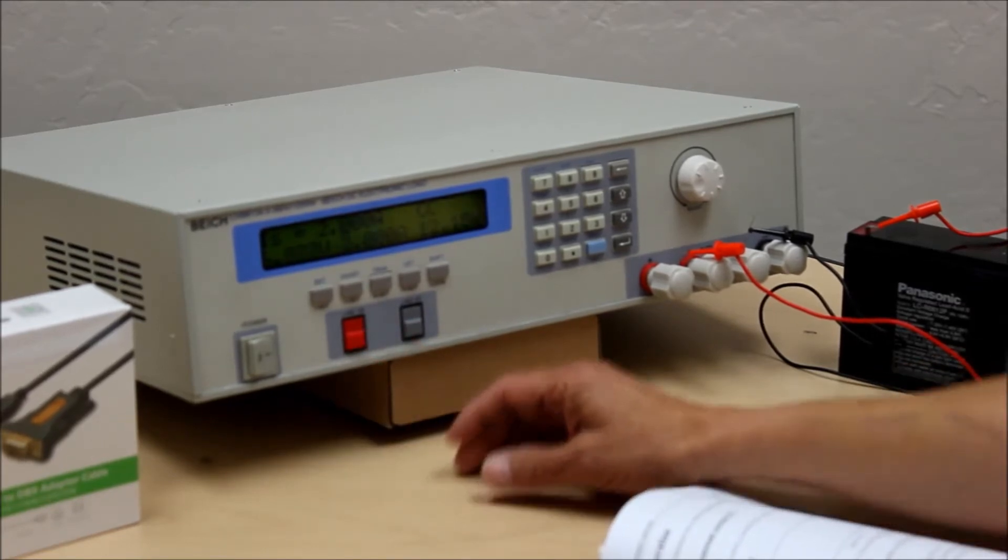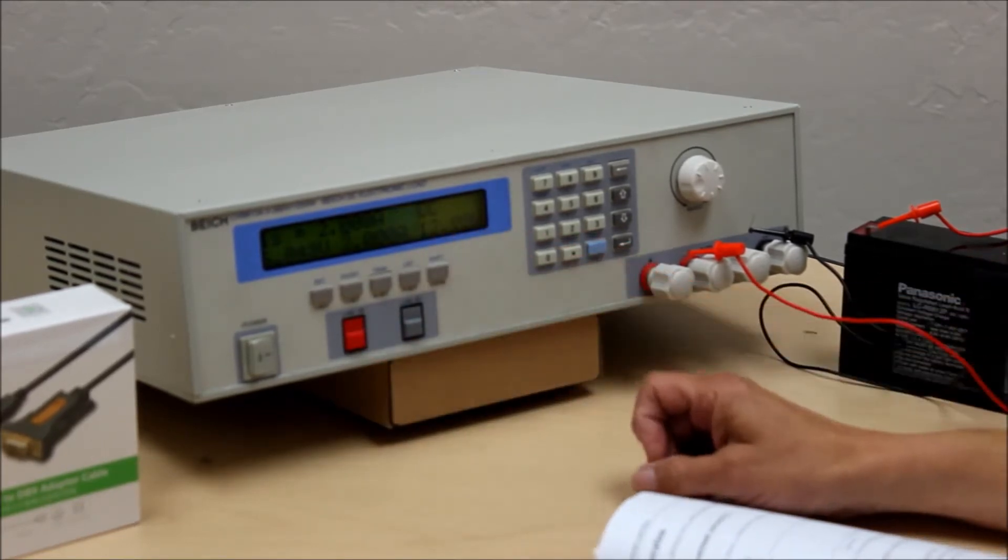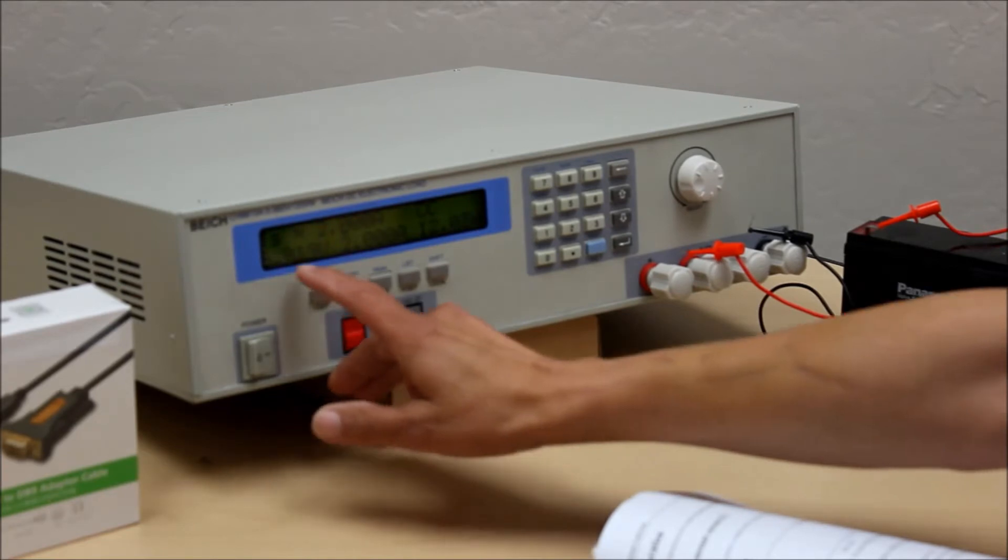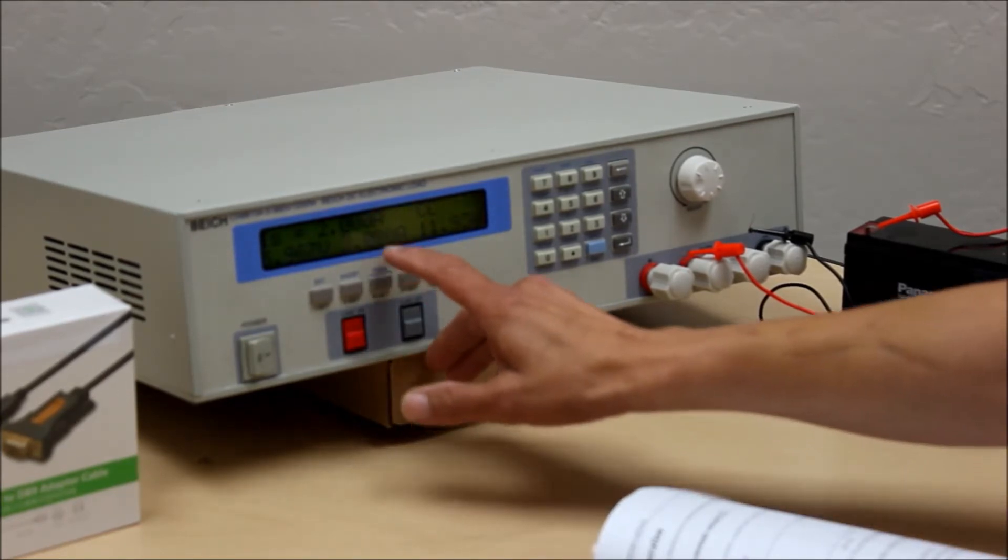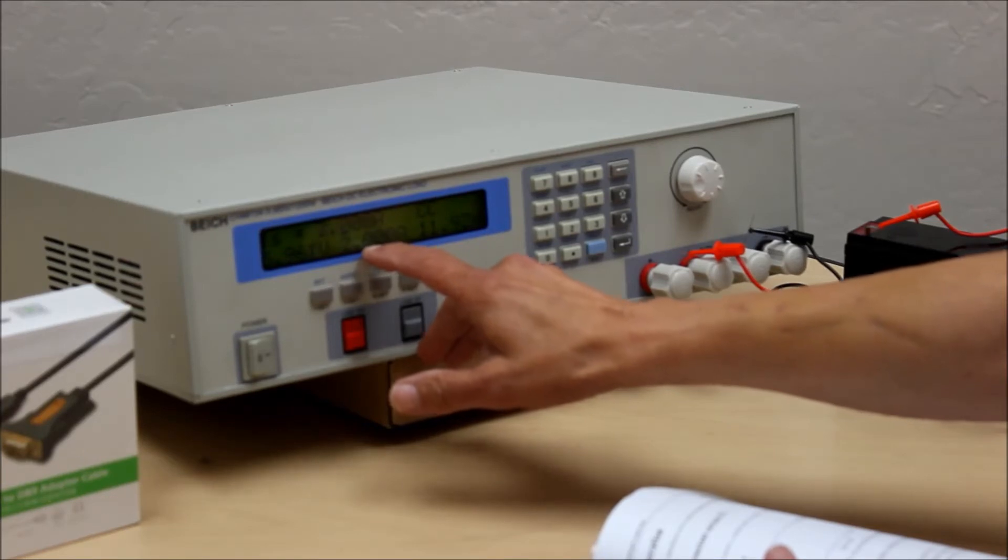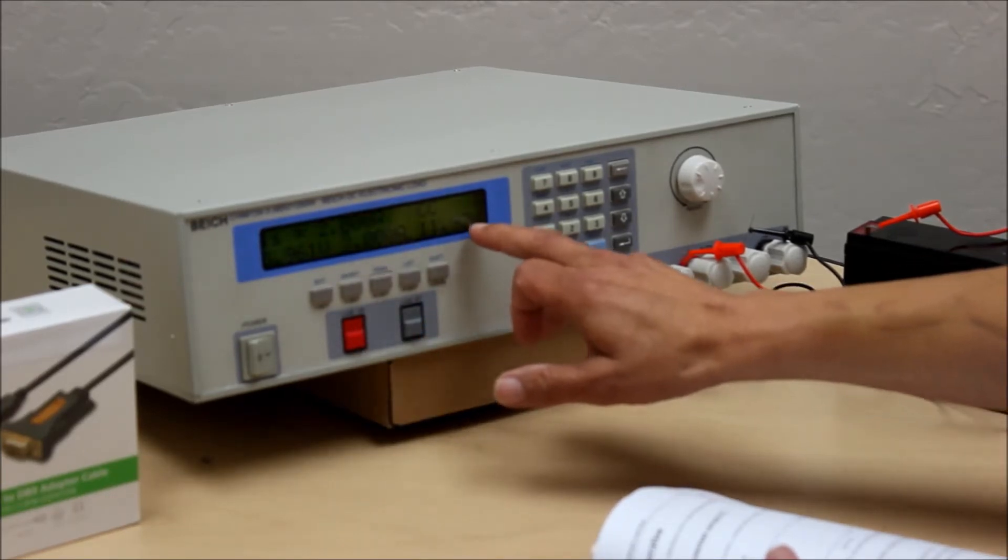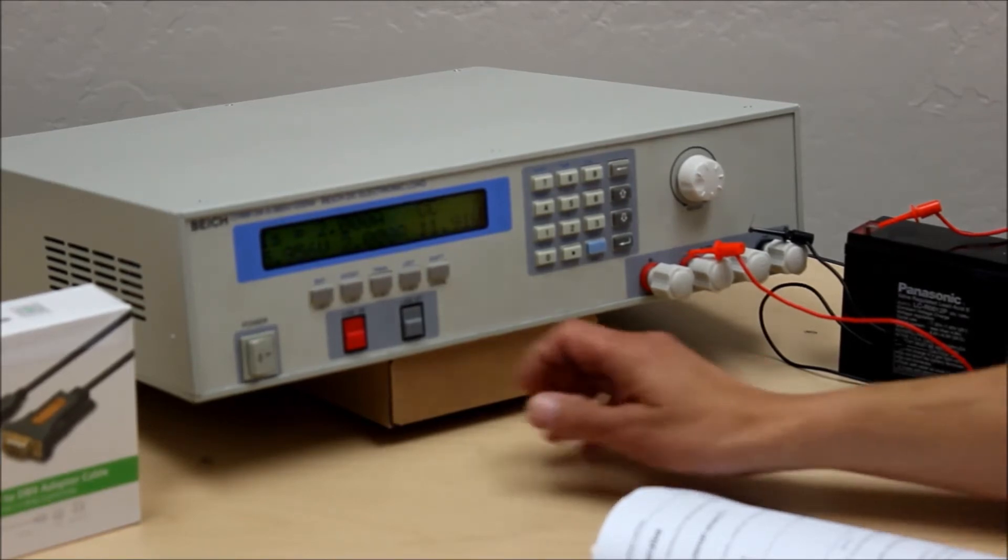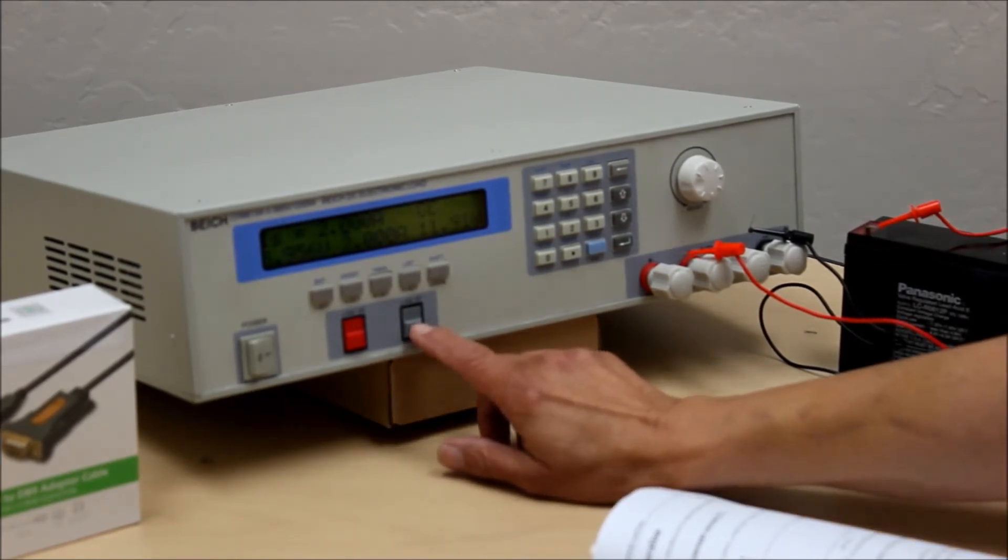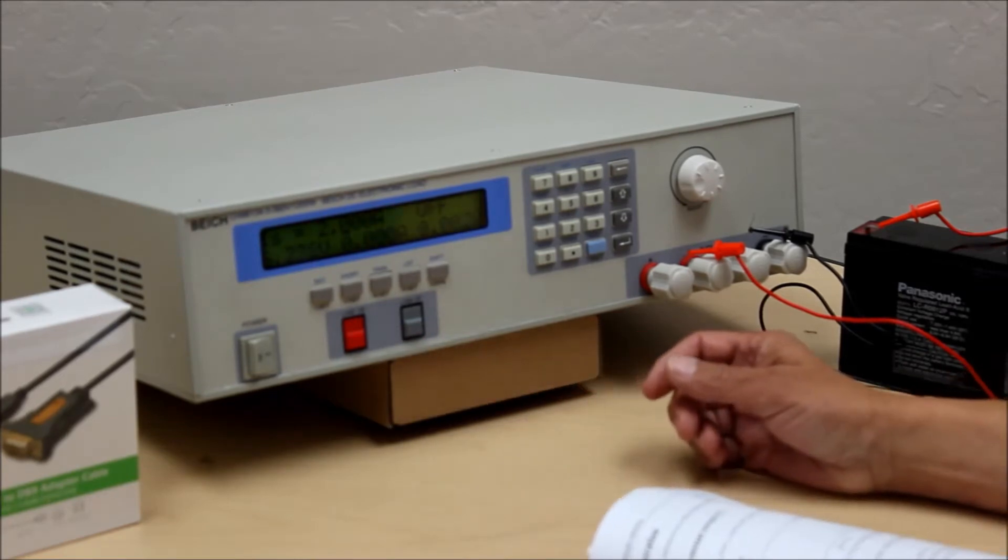So if I turn the unit on and now notice it comes up in constant current mode. That's what the CC is. Notice the voltage is starting to drop because as we discharge this battery we're going to start going below the no load voltage of that battery. Notice the value of the load is very constant at 2 amps and tells us that we're delivering 11.9 watts out of this battery. I'll go ahead and turn it off again now. I'm trying to save battery life a little bit.